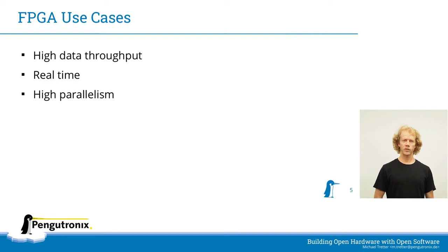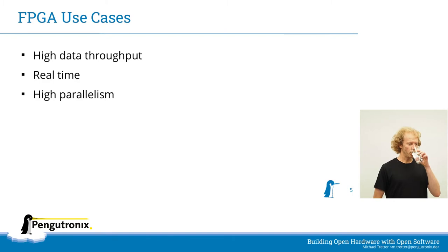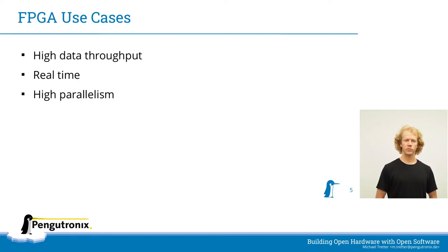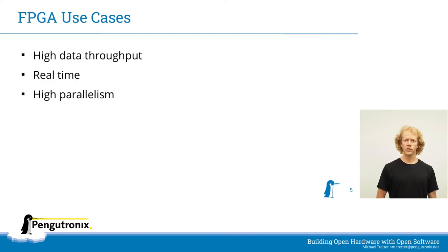Regarding FPGAs, I would like to start with a look at the use cases - in which situations you would want to use an FPGA instead of implementing a software solution or having a full custom hardware design. As part of the graphics team, I occasionally have customer products on my desk that feature one or more FPGAs. In most cases, these products have one or more of the following properties. One: the system has to handle high data throughput. In graphics, this very often comprises video data - for example, a raw 4K video stream at 60fps, which is a lot of data, is captured on an HDMI input port, may be encoded and sent via network, or processed and forwarded to an HDMI output port.